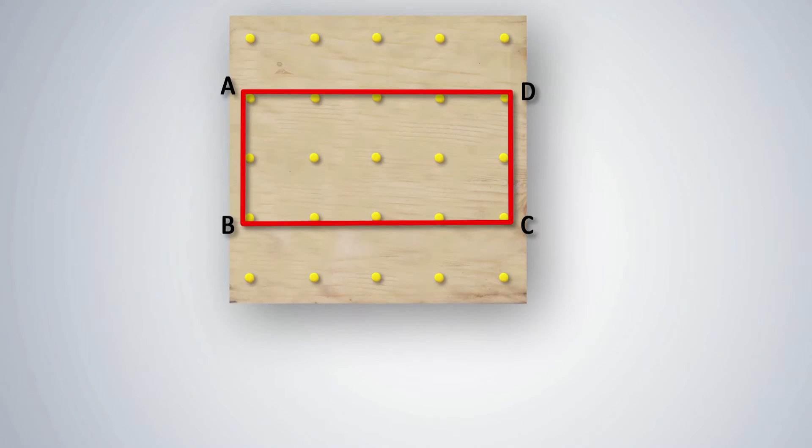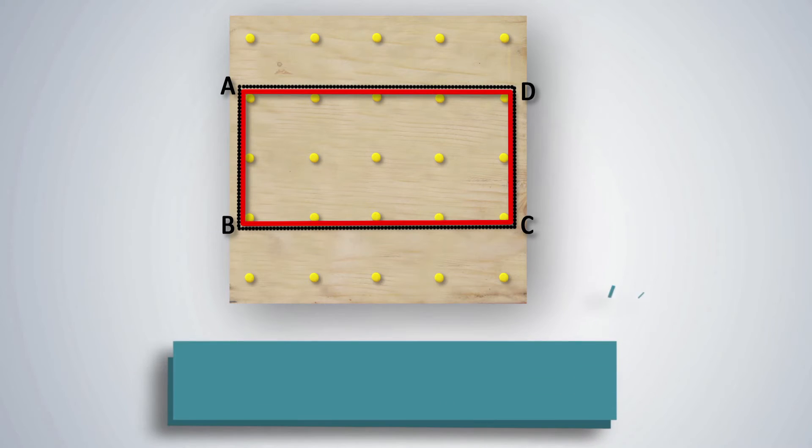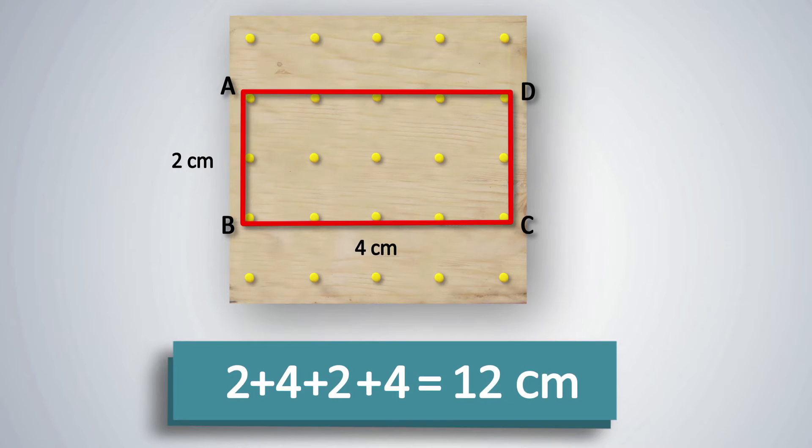If an ant starts walking from point A through B, C, D of a rectangle ABCD with sides 2 cm by 4 cm and comes back to A, it will cover a distance of 12 cm. This is equal to the sum of the lengths of the sides of the figure or its perimeter. Perimeter is expressed in cm or m.